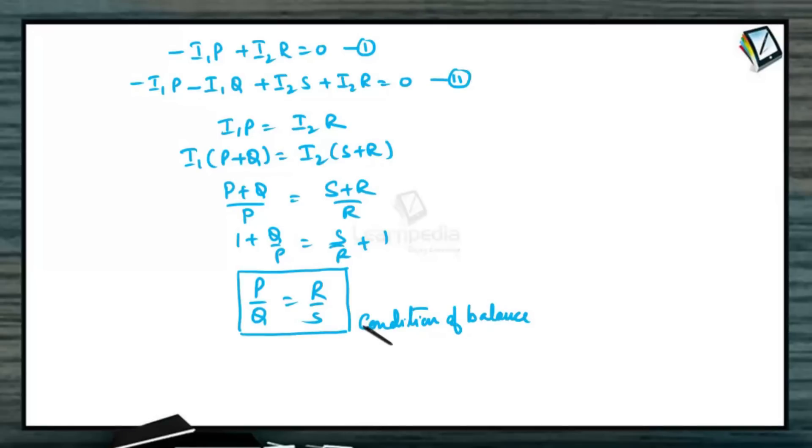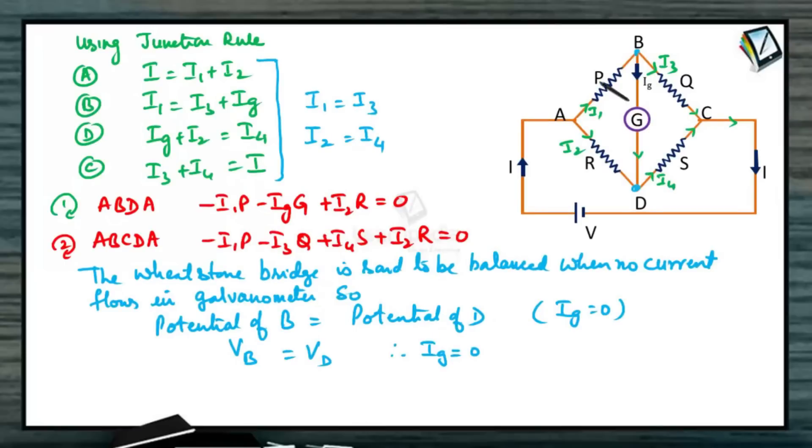Current through the galvanometer is 0, and P by Q equals R by S. That means when resistance P by Q is equal to ratio of resistance R by S, then the current through galvanometer becomes equal to 0 and potential of point D and B will be equal. Then it is called a balanced Wheatstone bridge condition.